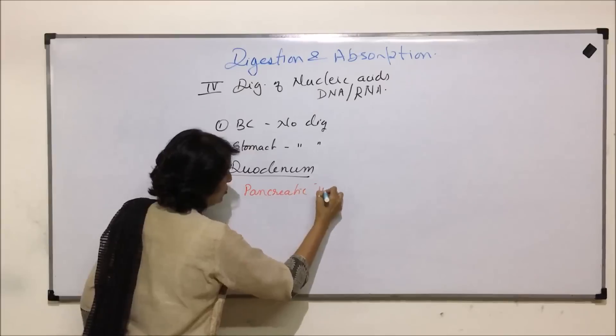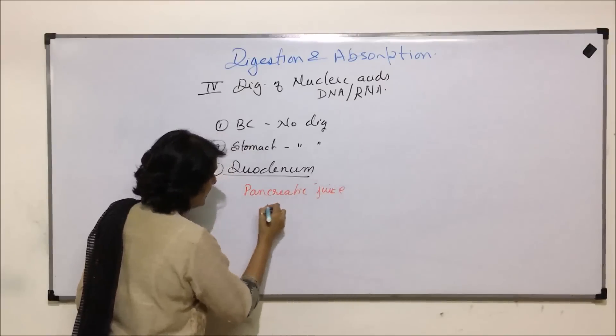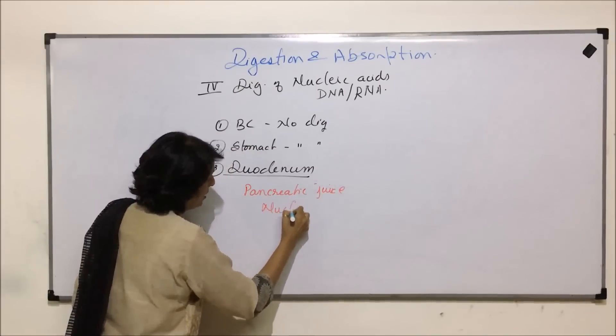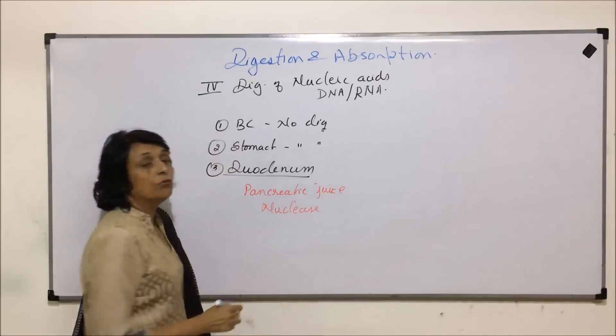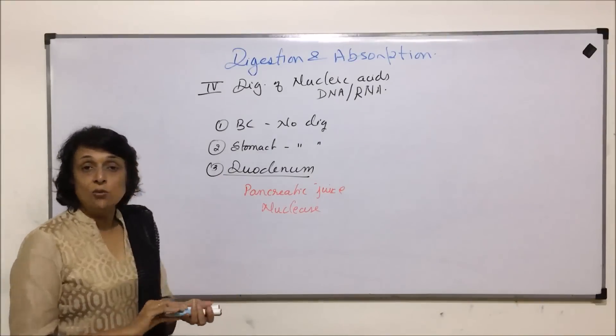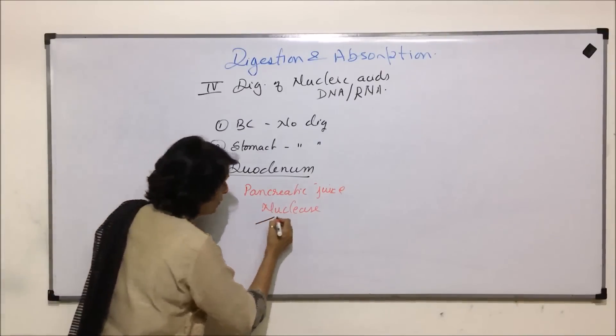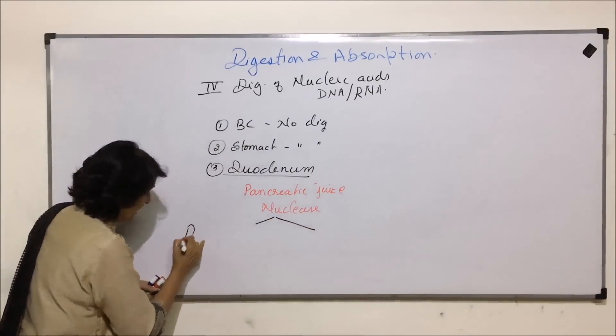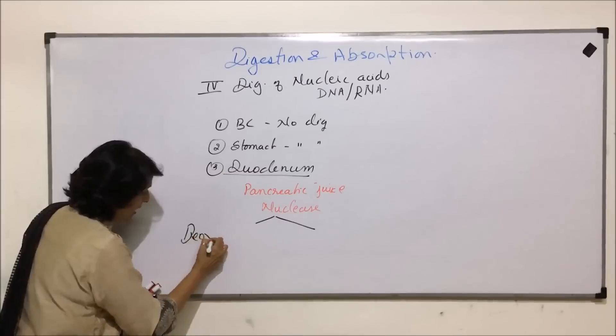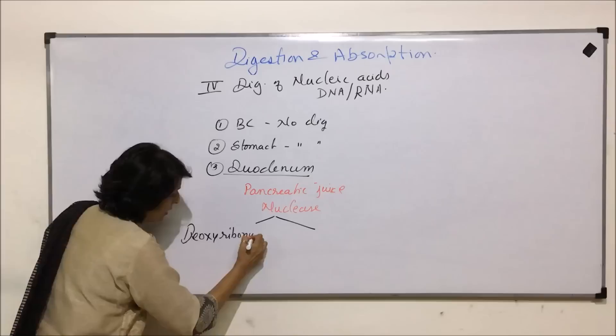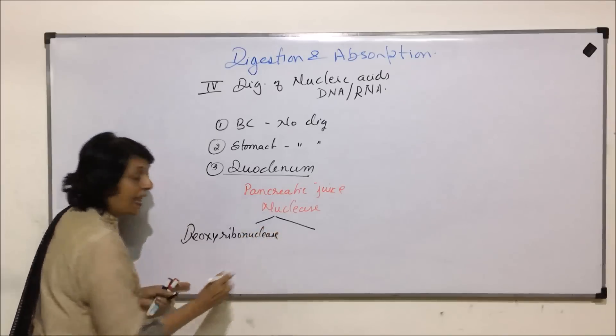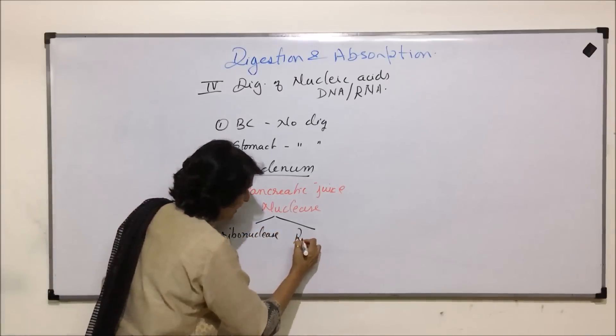Pancreatic juice has an enzyme called nucleases. These nucleases are of two types: deoxyribonuclease and ribonuclease.